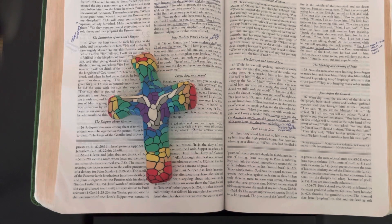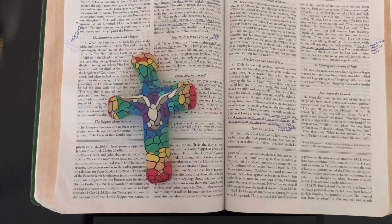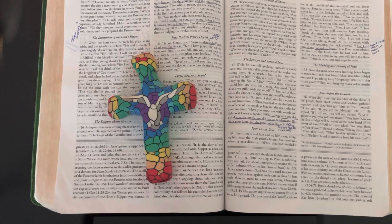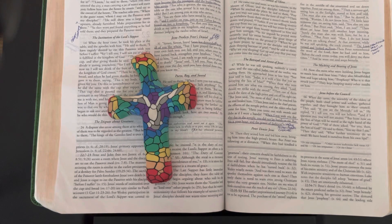A little later someone else on seeing him said, "You also are one of them." But Peter said, "Man, I am not." Then about an hour later still another kept insisting, "Surely this man also was with him, for he is a Galilean."